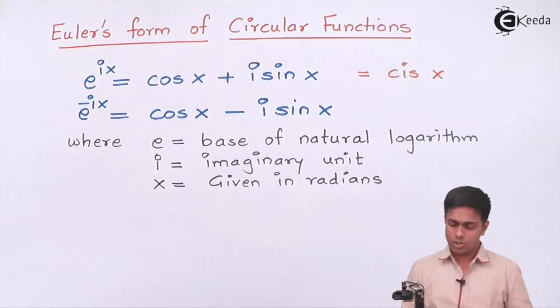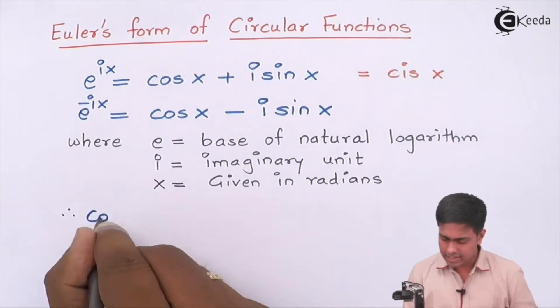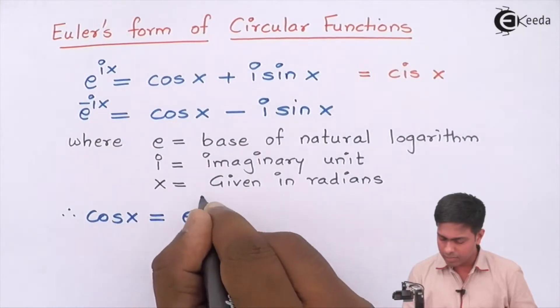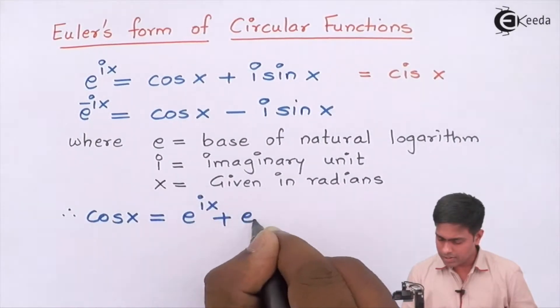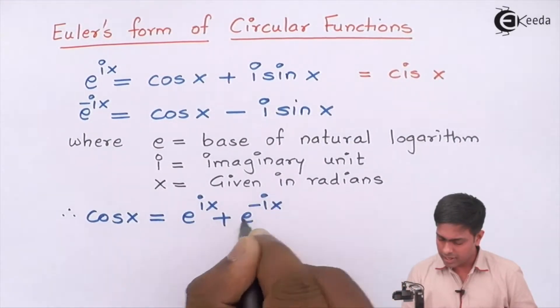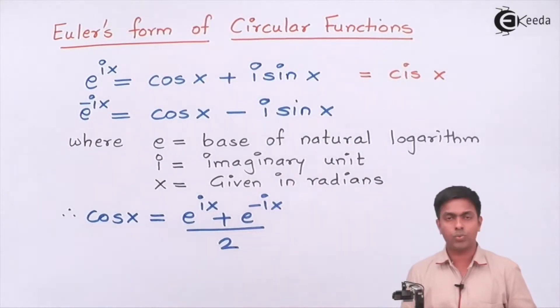Therefore, cos x = (e^(ix) + e^(-ix))/2. Similarly, if I want to find the value of sin x, I have to subtract these two values. By subtracting, cos x will be eliminated.